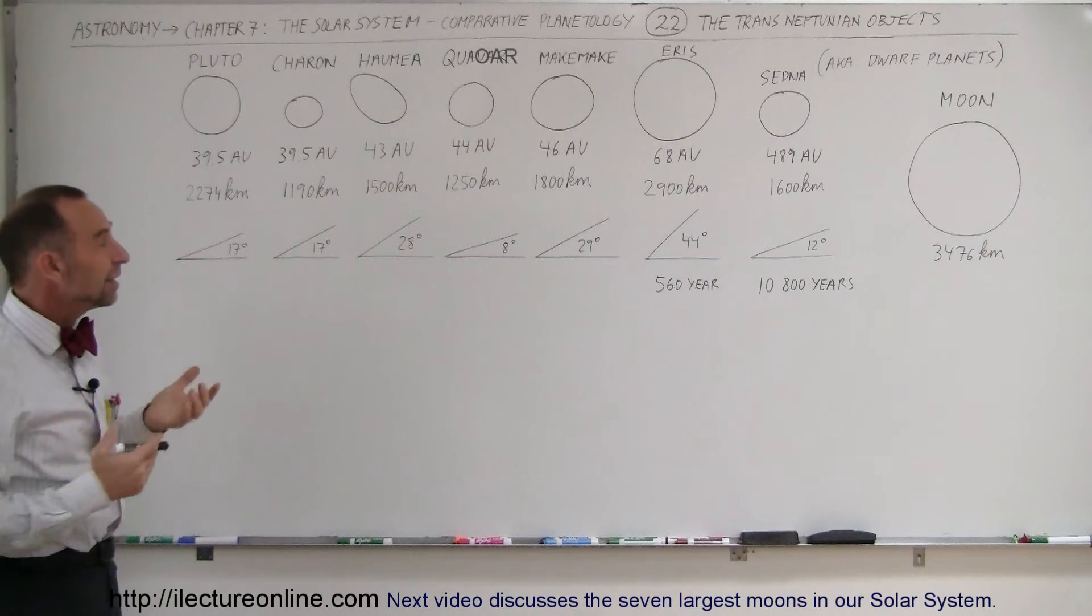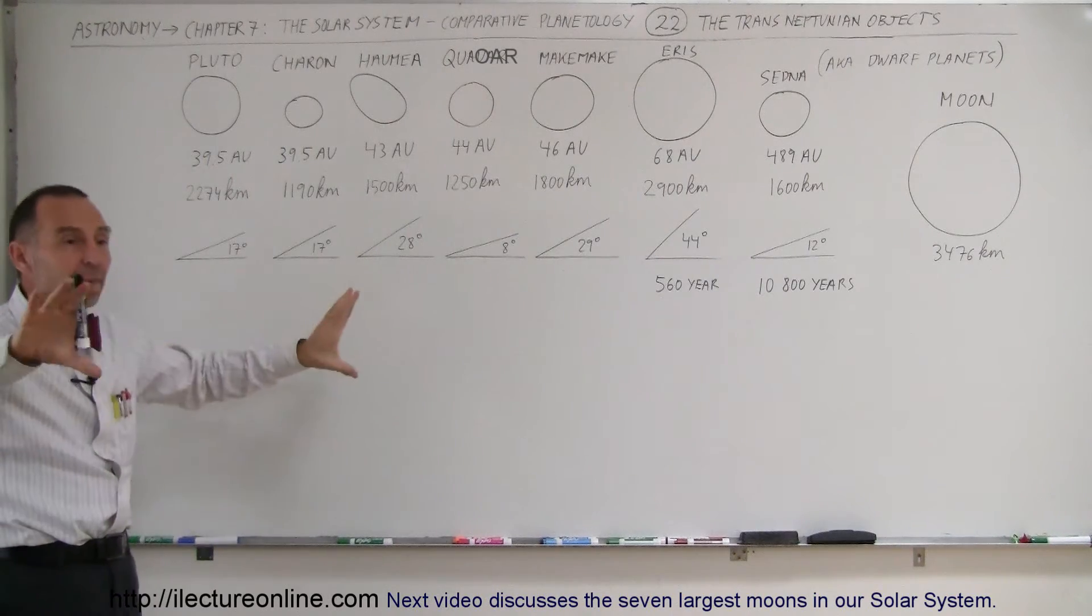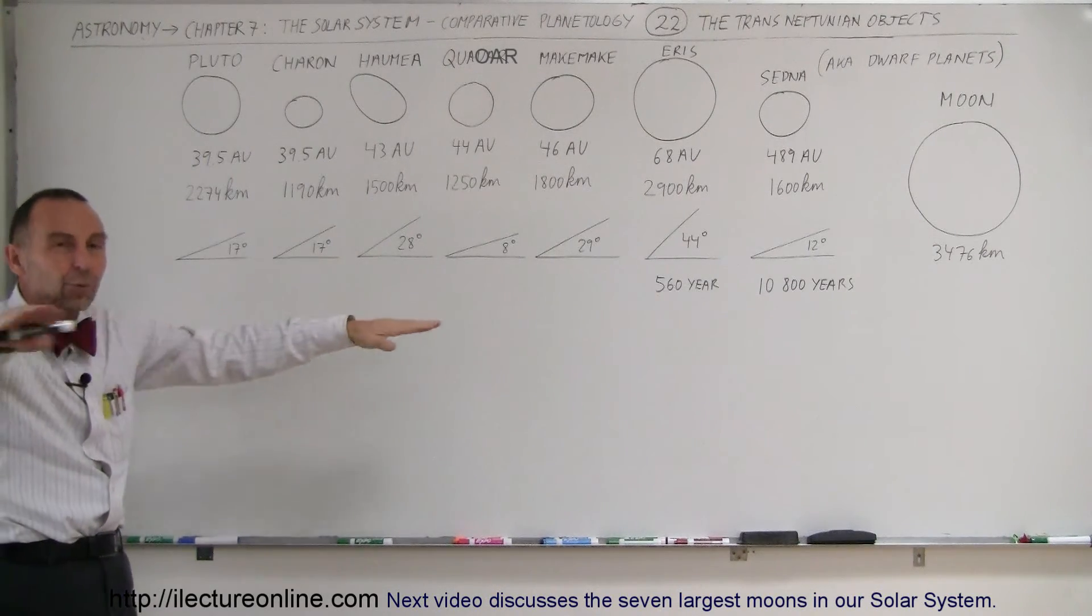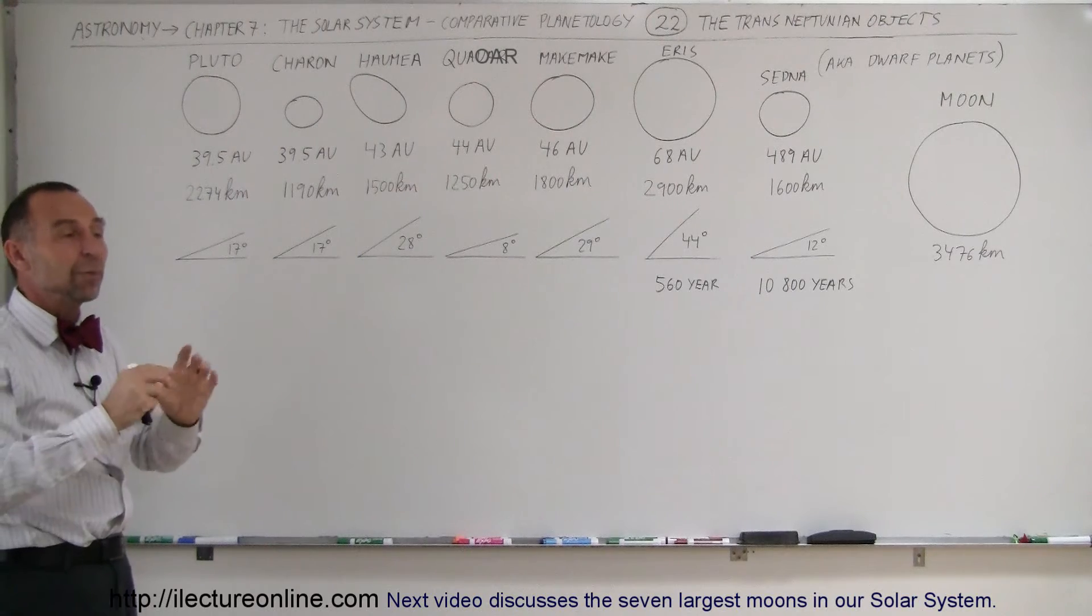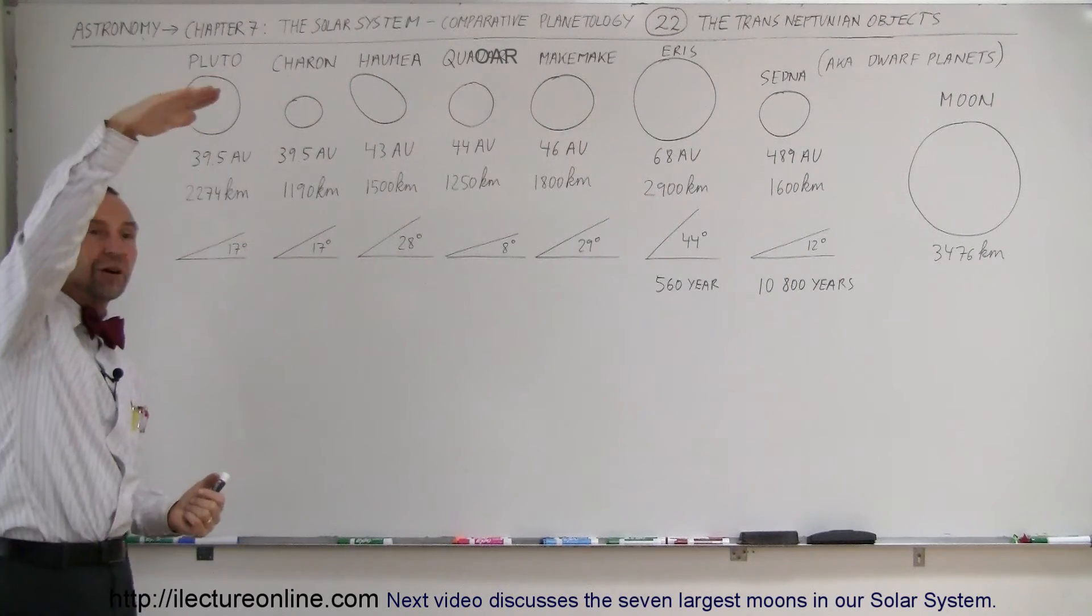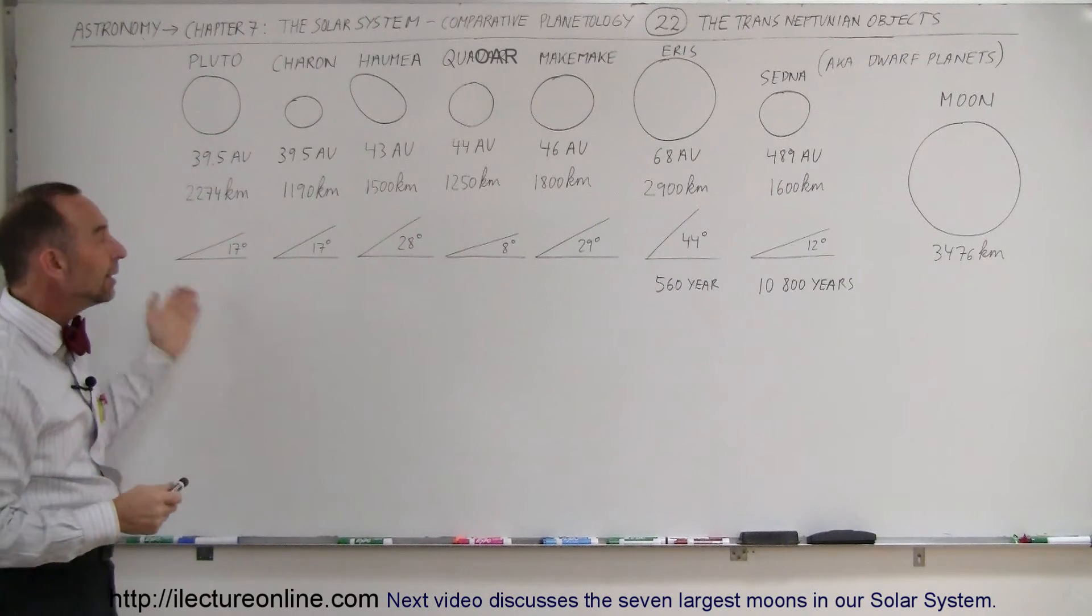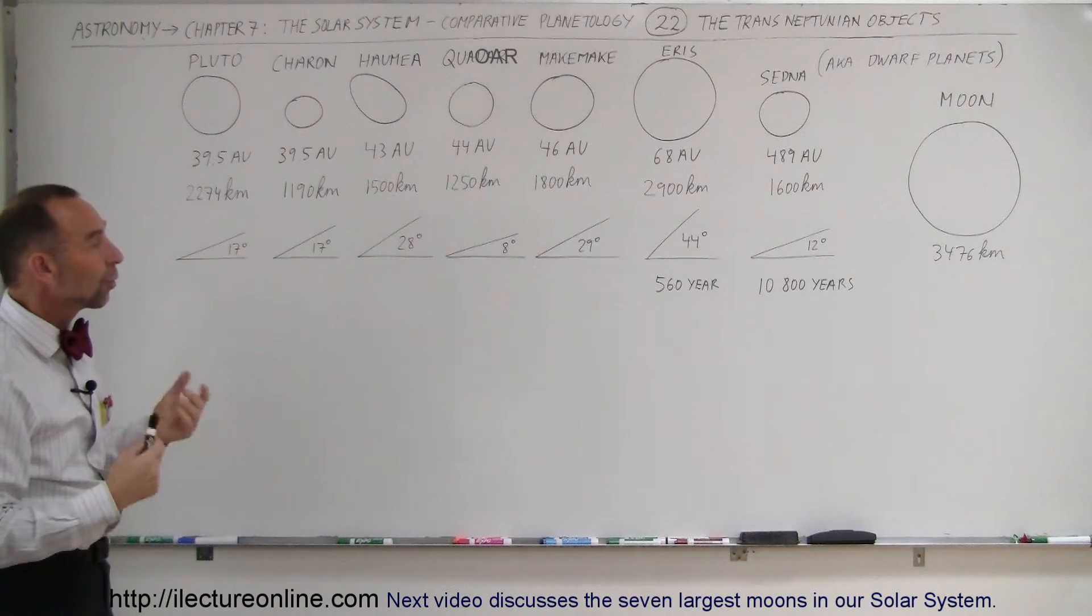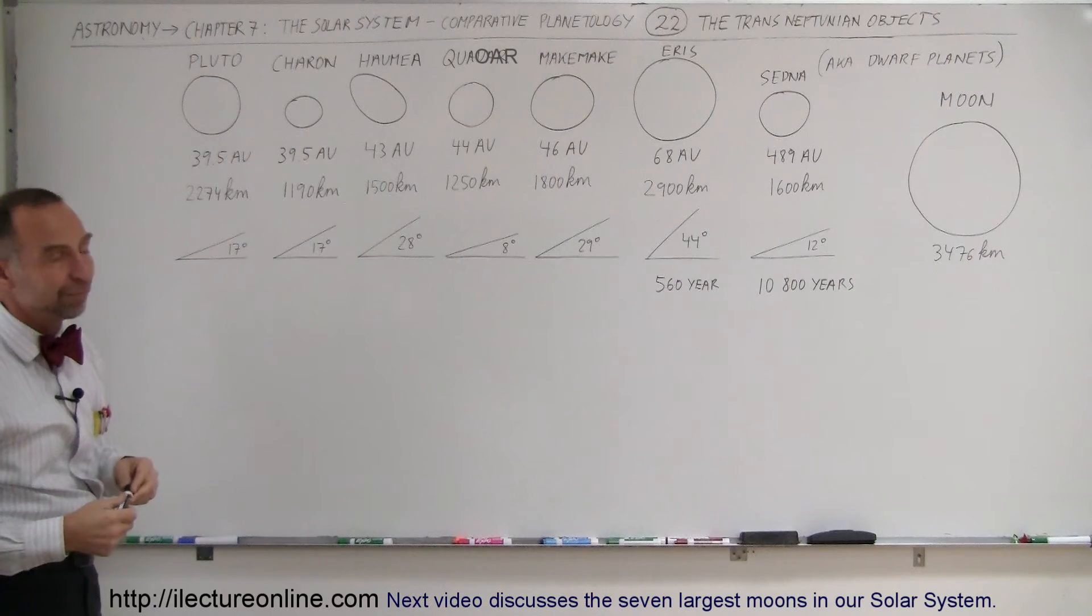So we assume that these bodies are in the Kuiper Belt, and the Kuiper Belt is not a flat ring around the solar system. The Kuiper Belt is actually like a donut-shaped object that has objects that are far above and far below the ecliptic plane. And here you can see how that affects the orbits of the various objects that we discover.